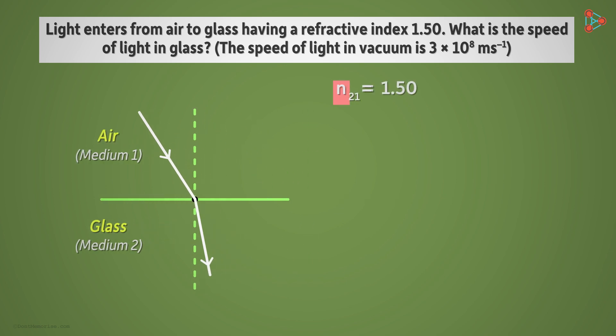But what is N21 equal to? Yes, it is equal to speed of light in medium 1 over the speed of light in medium 2. Here, V1 is speed of light in air and V2 is the speed of light in glass.